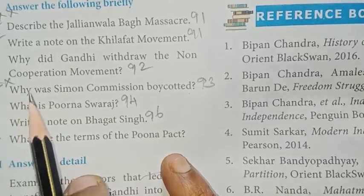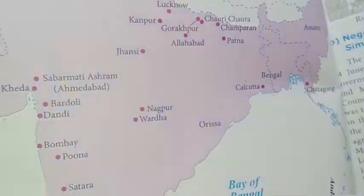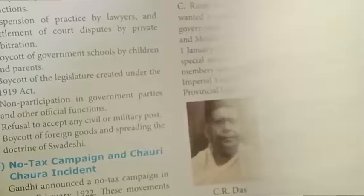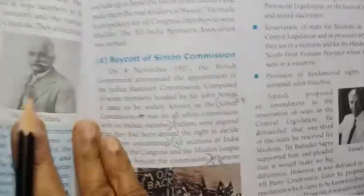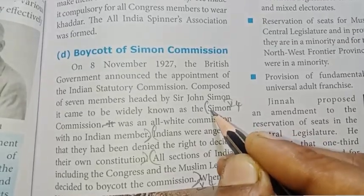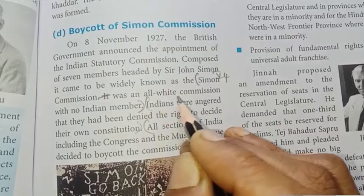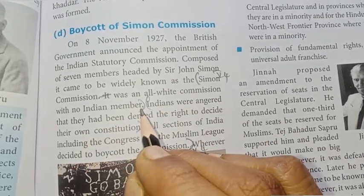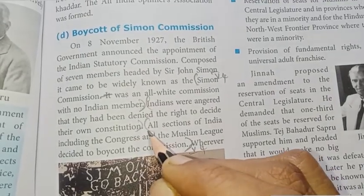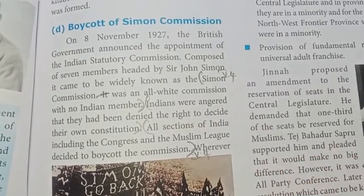Fourth: Why was Simon Commission boycotted? Page 93. Heading: Boycott of Simon Commission. First point: Simon Commission was an all-white commission with no Indian member. Second point: Indians and the constitution. Third point: All sections opposed the commission. Fourth one — answer.